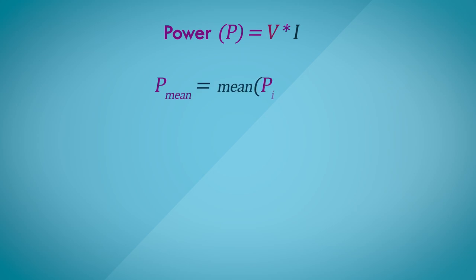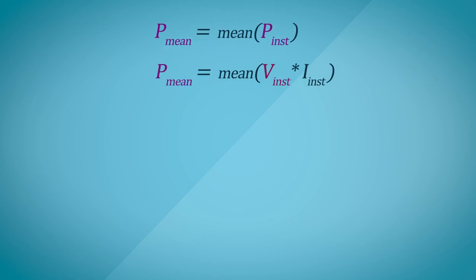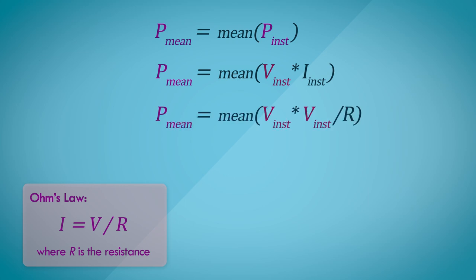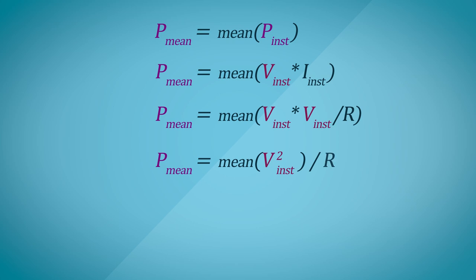So the average power, or the mean power, is basically the mean of the instantaneous power. Since we're assuming that it's a purely resistive load, by using Ohm's law, we can substitute current here with voltage divided by the resistance. Since resistance is constant, and the average doesn't really apply to the resistance, we have the following formula.